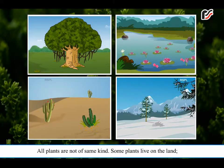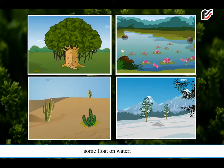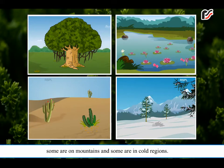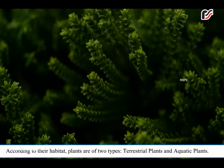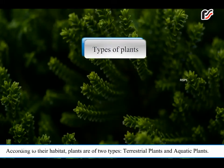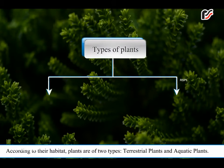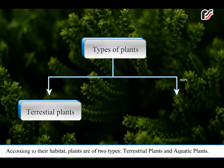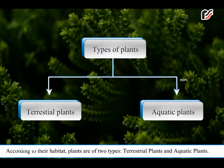All plants are not of the same kind. Some plants live on the land, some live in water, some float on water, some are in deserts, some are on mountains, and some are in cold regions. According to their habitat, plants are of two types: terrestrial plants and aquatic plants.